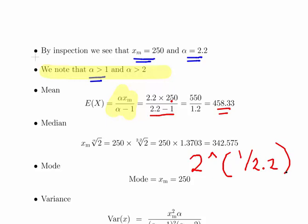So that's 2 to the power of 1 over 2.2, which is 250 times 1.3703, and there we get the answer of 342.575.